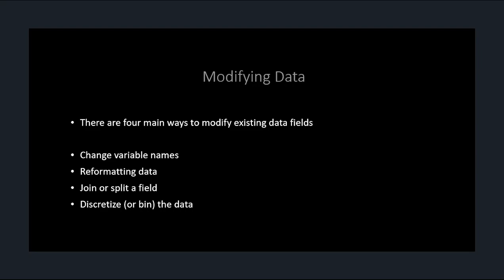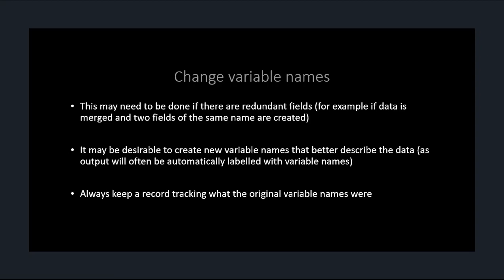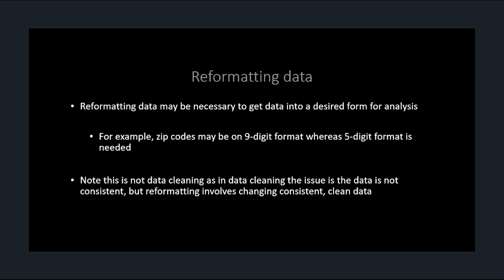The fourth modification — probably the most common — is grouping and binning data. When you take continuous data and do a frequency distribution, you can't just use the data individually; you have to group it into ranges like 10 to 20 and so on. Binning data or creating groups is another way of modifying existing data. Always retain the original data — never delete it. Save the original and either work step by step or keep a log of everything you modified, because you never want to lose the original data.